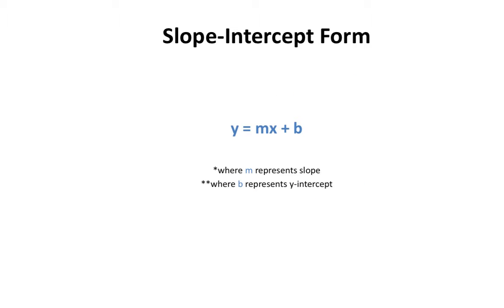A linear relation can also be expressed in slope-intercept form, which is represented by y equals mx plus b, where m represents the slope and b represents the y-intercept.